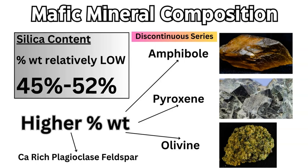The clear distinction between mafic and felsic rocks also comes from the minerals that make up mafic rocks, derived from mafic lava or magma. The four main minerals are amphibole, pyroxene, olivine, and calcium-rich plagioclase feldspar. Olivine, pyroxene, and amphibole are all on the discontinuous series of Bowen's reaction series, in the higher temperature range — above and around 1,000 degrees Celsius — making them the first minerals to form in cooling magma. They form the basis for all mafic and ultra-mafic rocks.